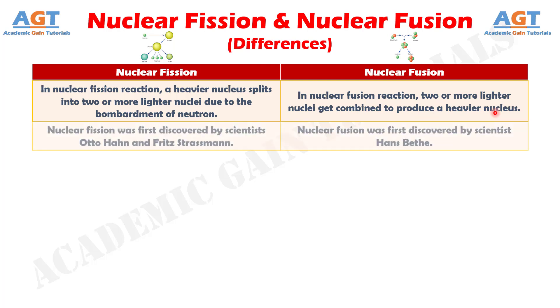Number two: nuclear fission was first discovered by scientists Otto Hahn and Fritz Strassmann, whereas nuclear fusion was first discovered by scientist Hans Budd.